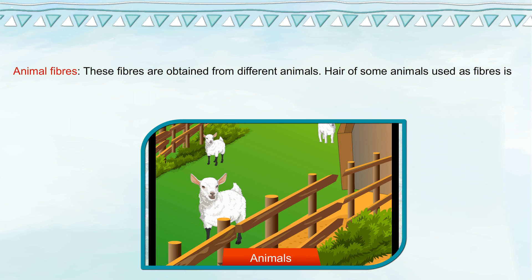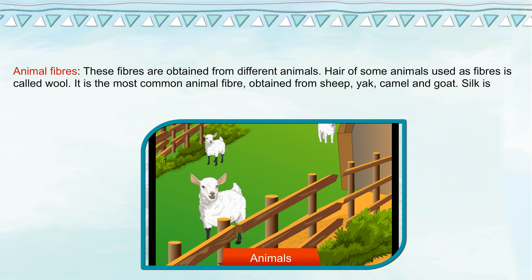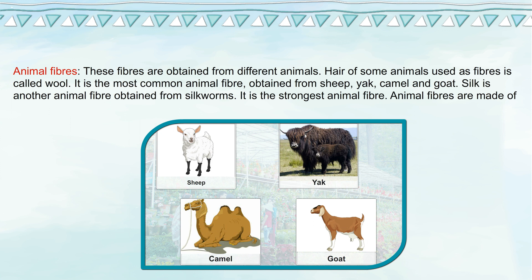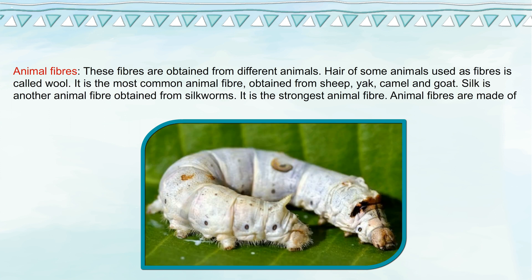Animal fibers are obtained from different animals. Hair of some animals used as fiber is called wool — it is the most common animal fiber, obtained from sheep, yak, camel, and goat. Silk is another animal fiber obtained from silkworms — it is the strongest animal fiber. Animal fibers are made of proteins.